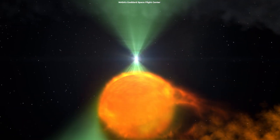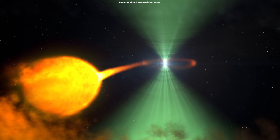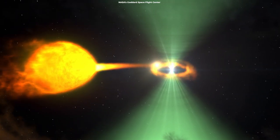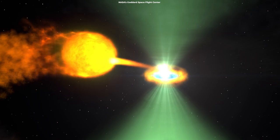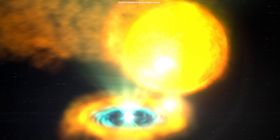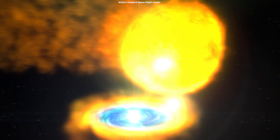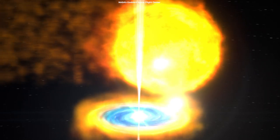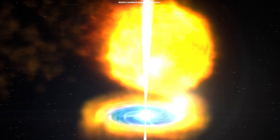Millisecond pulsars, which are extremely dense and only about the size of a city, produce radio signals from their poles as they spin. The frequency of these signals is remarkably consistent, and they can even be employed as a kind of galactic clock, against which other events might be timed.